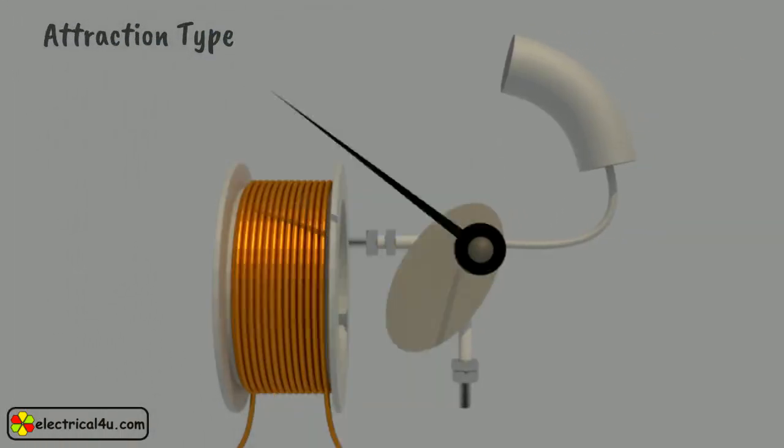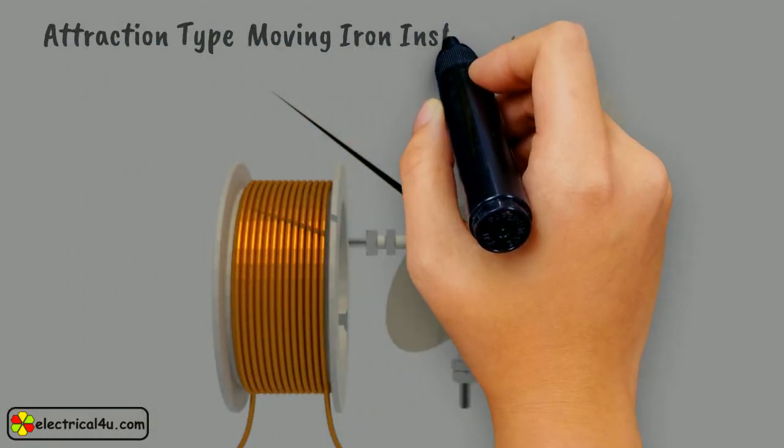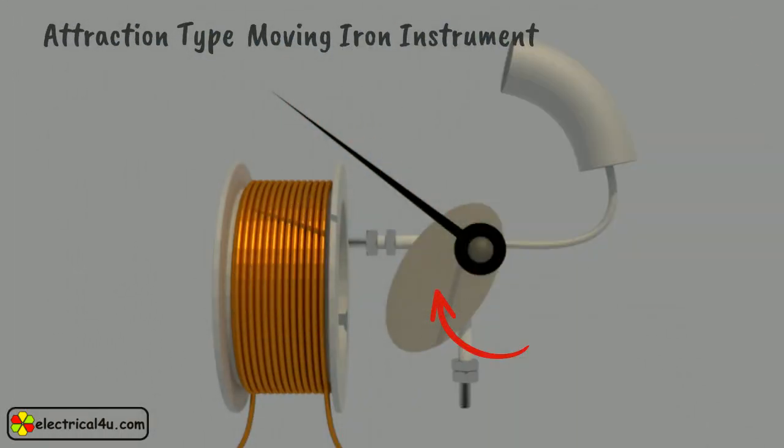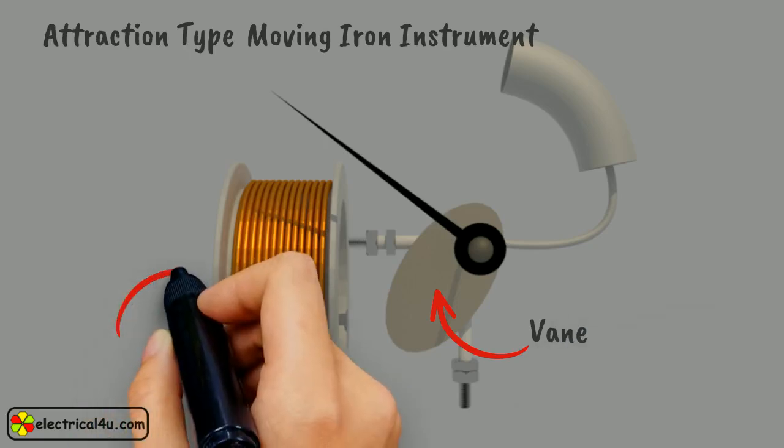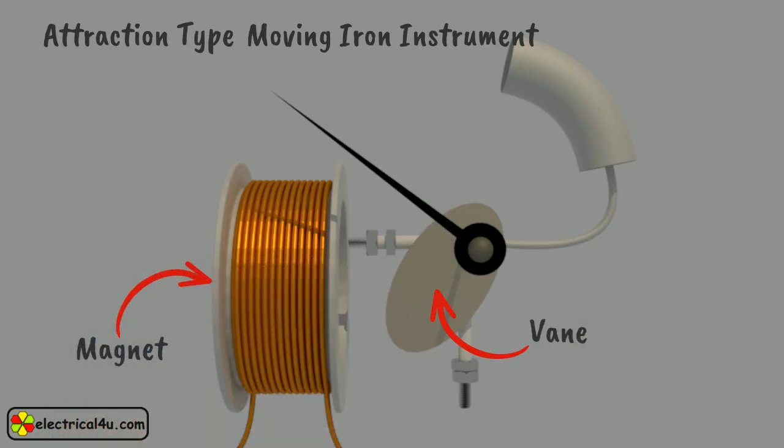Now let us come to the attraction type moving iron instrument. A piece of soft iron vein is placed nearer to a magnet so that it would be attracted by the magnet. The force of this attraction depends upon the strength of said magnetic field.